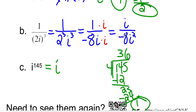So that gives us i over negative 8 times... i times i is i squared. And, of course, i squared is negative 1. So in the denominator, we have negative 8 times negative 1, which is positive 8. So our final answer is i over 8, which you could also write as 1/8 i.